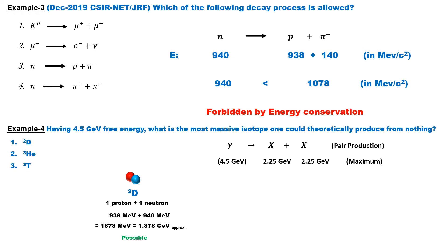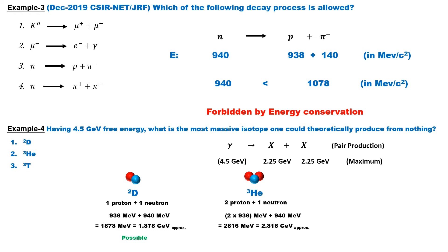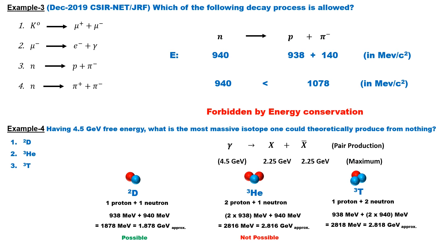Helium-3 consists of 2 protons and 1 neutron, giving a total mass of 2816 MeV or 2.816 GeV. Since the maximum mass of a particle produced from 4.5 GeV is 2.25 GeV, helium-3 cannot be produced. Similarly, triton consists of 1 proton and 2 neutrons with a total mass of 2818 MeV or 2.818 GeV, which also cannot be produced from 4.5 GeV free energy.